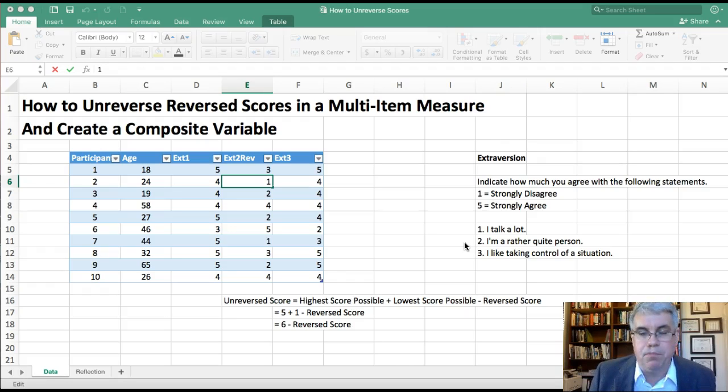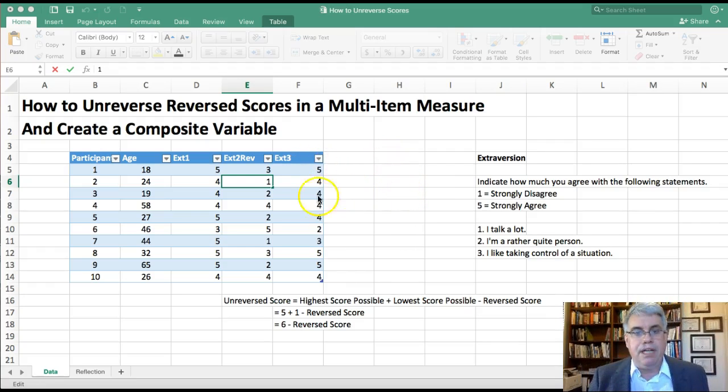So that's what we have here. We've got data, the first item I called Extroversion 1, EXT 1. The second one I called EXT 2 because it's our second question measuring extroversion, but it's reversed scores. I put in the letters REV so that we know that the high scores mean introverted and the low scores mean extroverted. And then we have Extroversion 3, which is also unreversed, where the low scores mean introversion and the high scores mean extroversion.